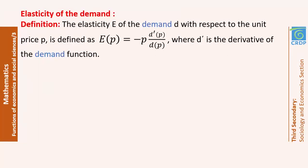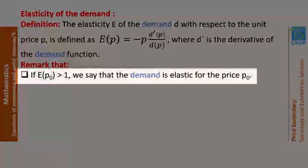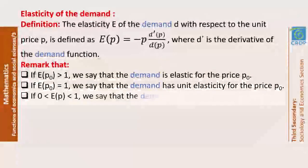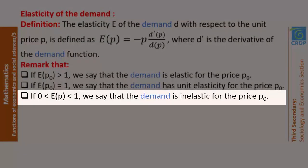The elasticity of demand E(P) is calculated as: E(P) = −P × D′(P) / D(P), where D′ is the derivative of the demand function. There are three cases: if E(P₀) > 1, the demand is elastic at P₀; if E(P₀) = 1, the demand has unit elasticity at P₀; and if 0 < E(P₀) < 1, the demand is inelastic at P₀.